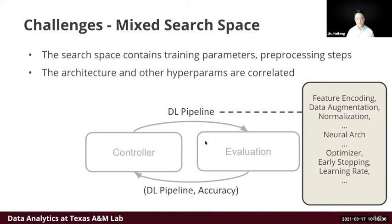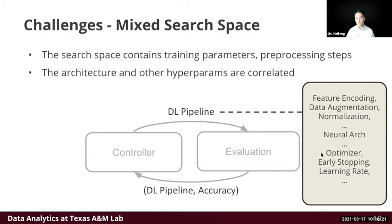The third challenge is the mixed search space. Besides neural architectures, there are other parameters in the deep learning pipeline: feature encoding, data augmentation, normalization, optimizer, early stopping, and learning rates. These must all be tuned together with the neural architecture because they are correlated — a certain neural architecture may only perform well with certain types of optimizers. So you can't fix the architecture and then tune the rest; you have to tune them all jointly.